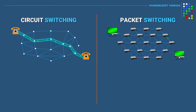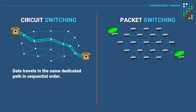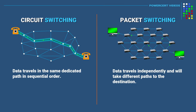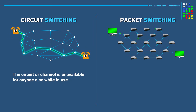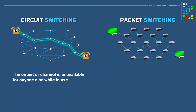Another difference is that in circuit switching the data travels in the same dedicated path in sequential order, while in packet switching the data travels independently and will take different paths to the destination and may not arrive in sequential order. And finally, in circuit switching, the circuit or channel is unavailable for anyone else while in use.